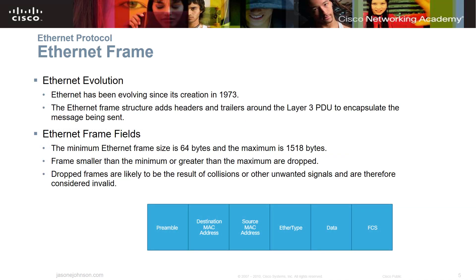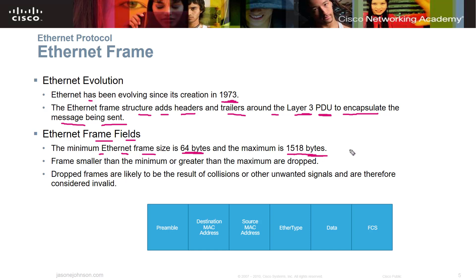When we talk about the Ethernet frame, remember we discussed packets and frames. Ethernet has been evolving since its creation in 1973 — a long time, even for technology. The Ethernet frame structure adds headers and trailers around the layer three PDU to encapsulate the message being sent. The minimum Ethernet frame size is 64 bytes and the maximum size is 1,518 bytes — something you may see on an exam.